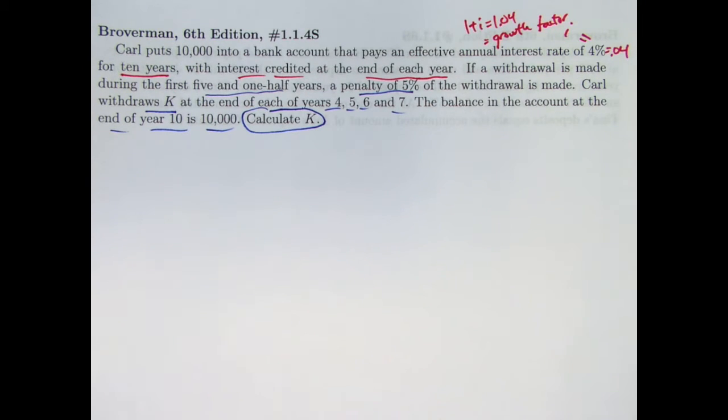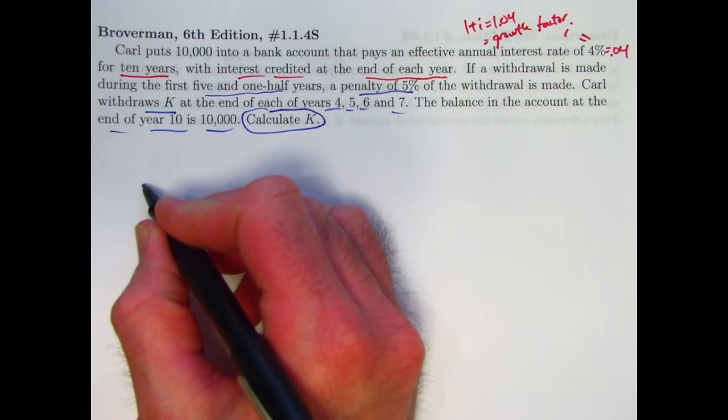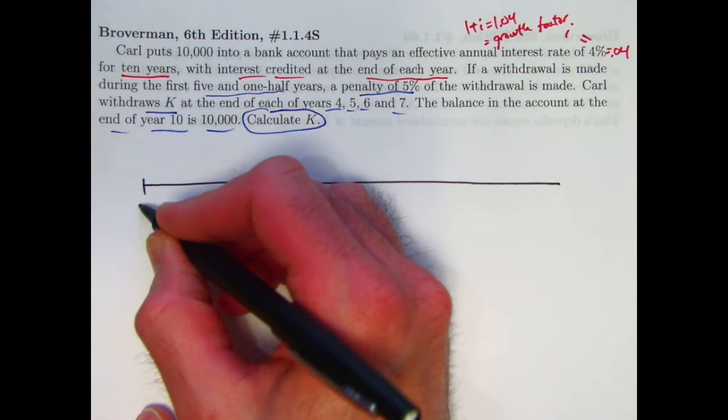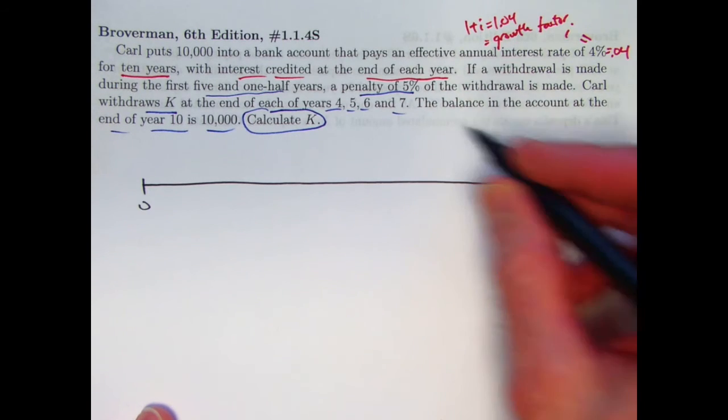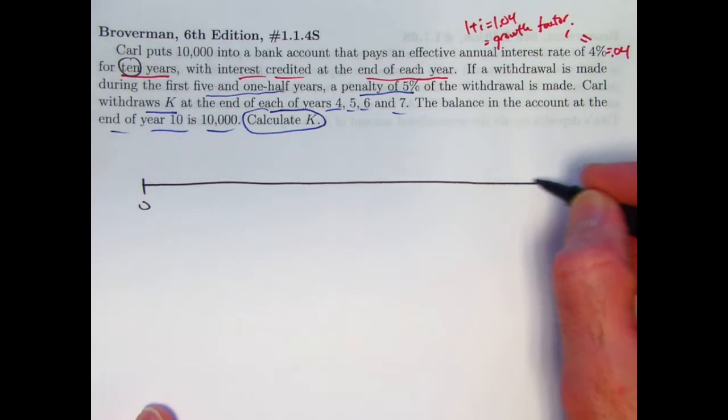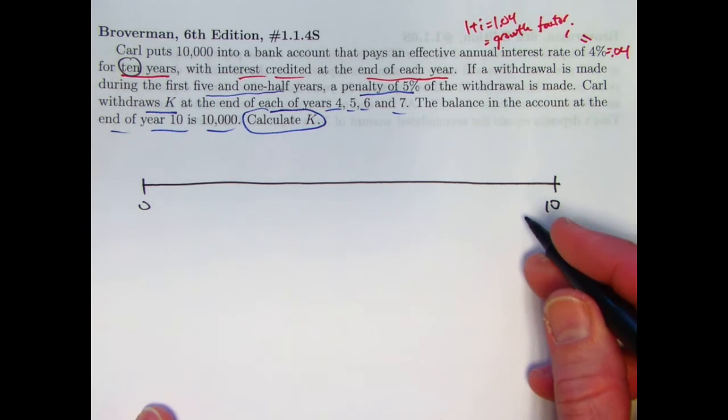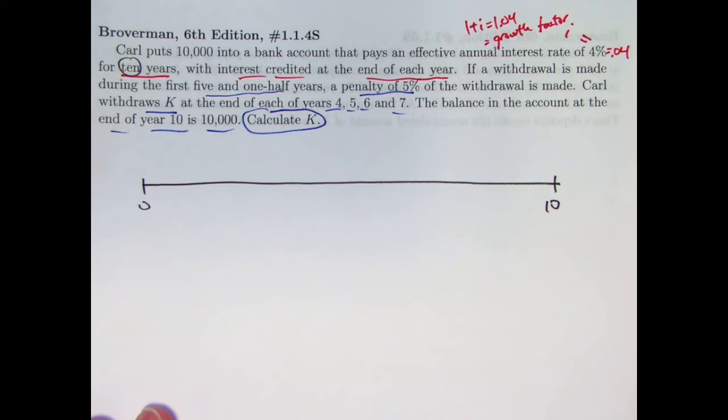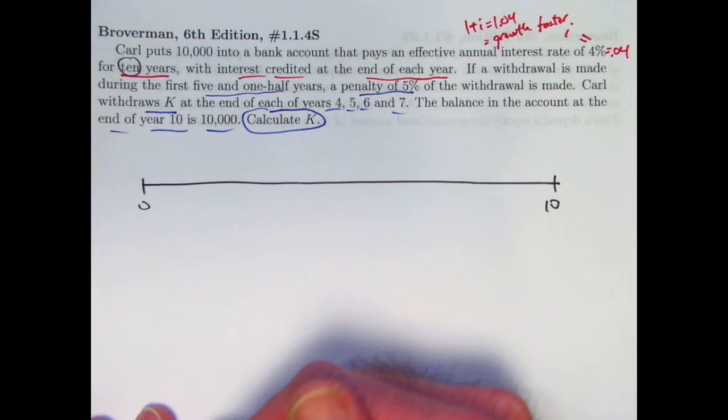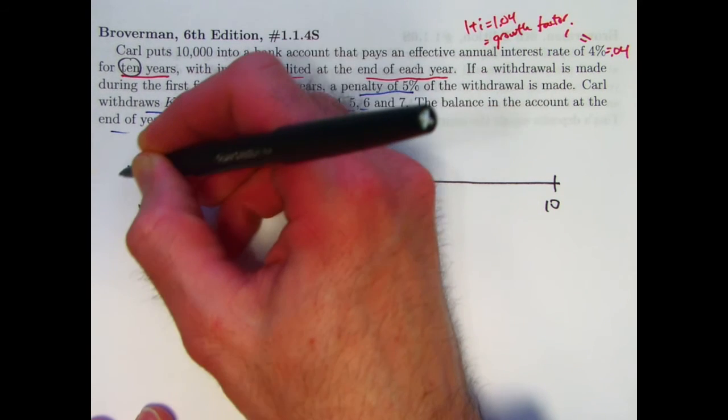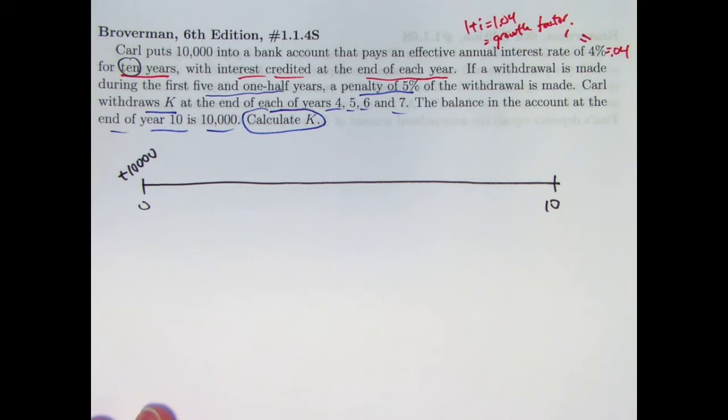It's almost always, in these kinds of problems, helpful to draw a number line starting at time 0 and ending at time whatever. Here in this case, it's 10 years. So this is going to be a 10 over here. So I'm going to label my times below the number line, and I'm going to label my deposits and withdrawals on top of the number line.